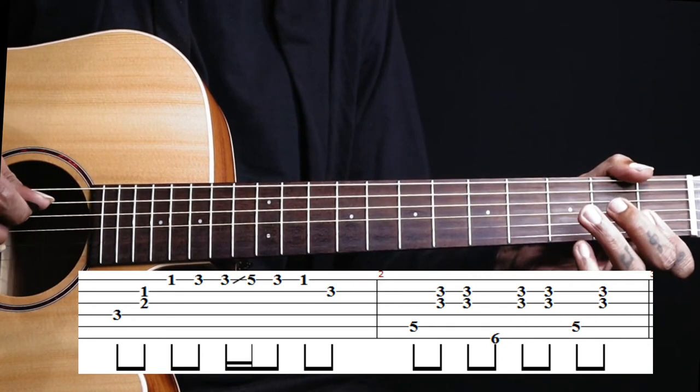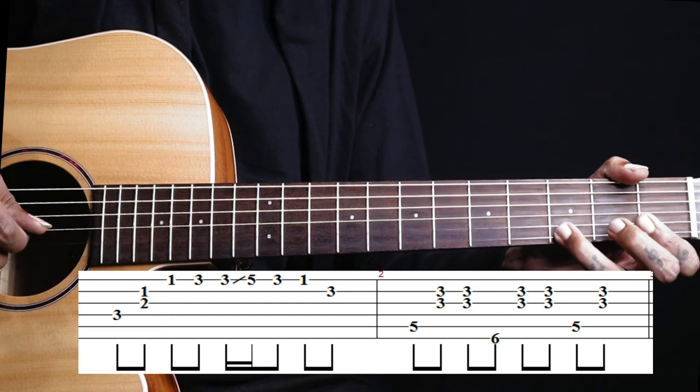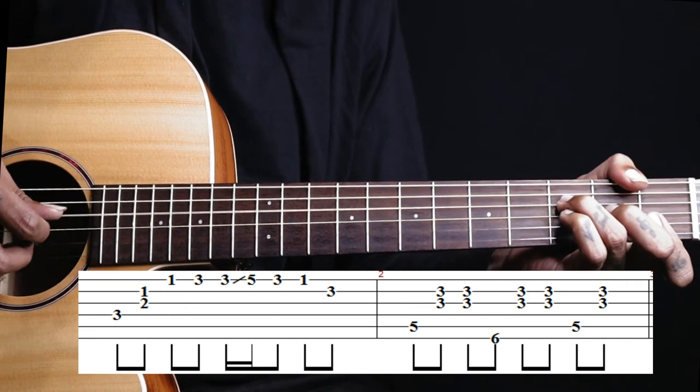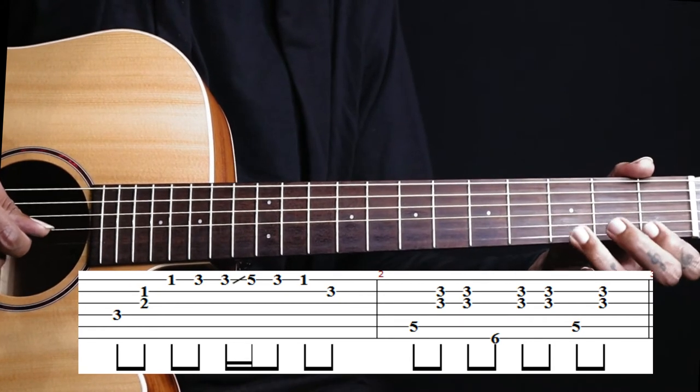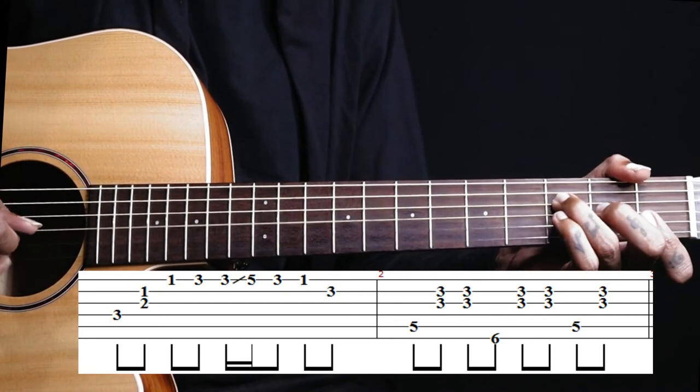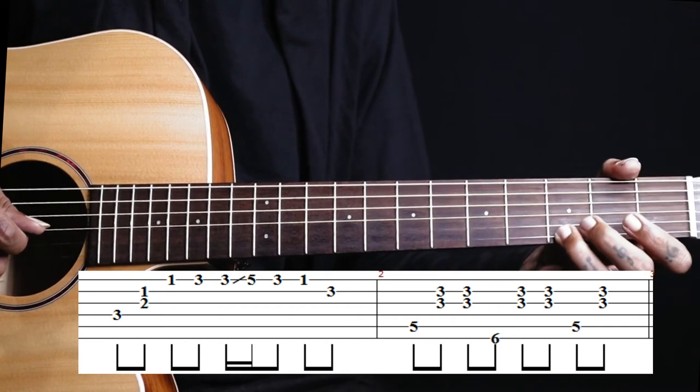Then we have 1st fret on the 1st string, then 3rd fret on the 1st string. Then we slide, 3, 2, 5. Then we come back to 3.